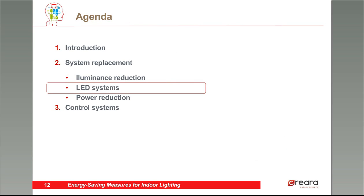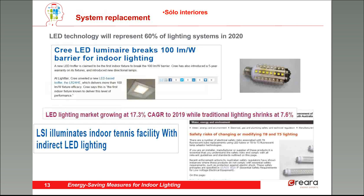Moving forward, we're going to talk about LED systems. LED technology will represent 60% of all lighting systems in 2020. Some recent news: Cree LED luminaire breaks 100 lumens per watt barrier for indoor lighting. LED lighting market growing at 17.3% while traditional lighting shrinks at 7.6%. LSI illuminates indoor tennis facility with indirect LED lighting.